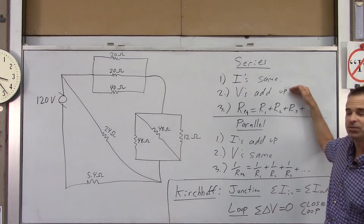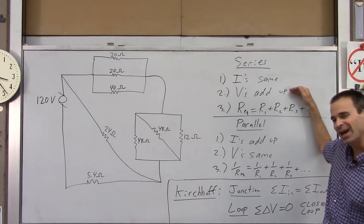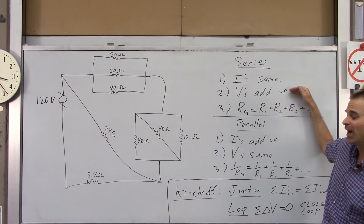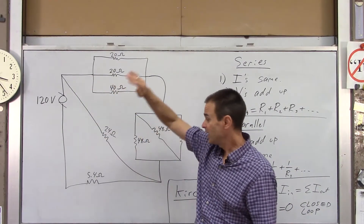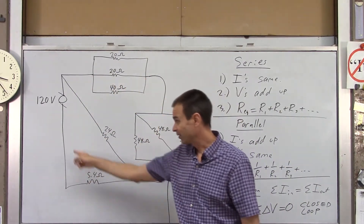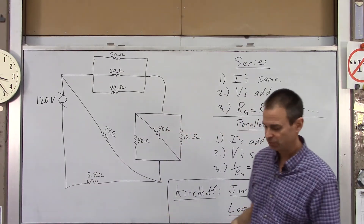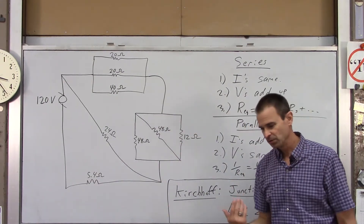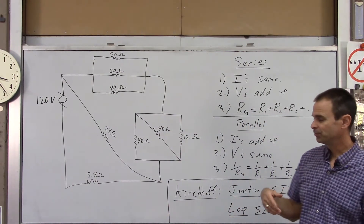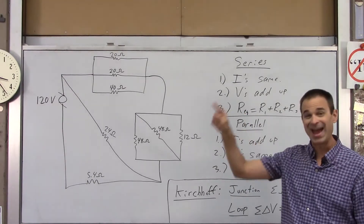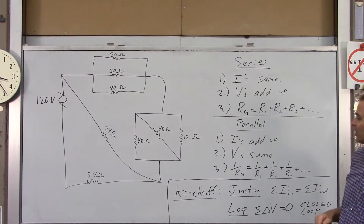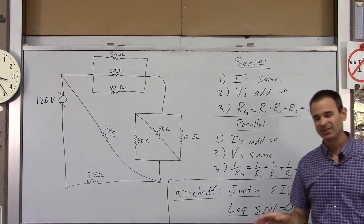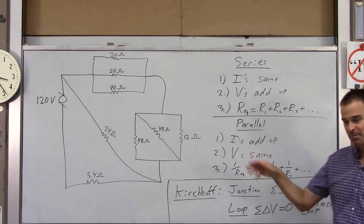In series circuits, the voltages add up — think of voltage like electrical height. If you go up 120 volts and come back down to the bottom of the power supply, you lose 120 volts total. The resistances also add up in series.